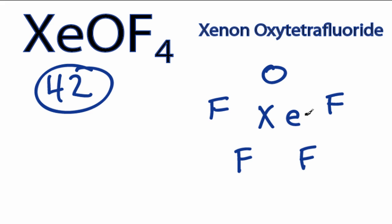First, we'll draw bonds between atoms, like this. Each bond, two electrons. We've used 2, 4, 6, 8, 10.